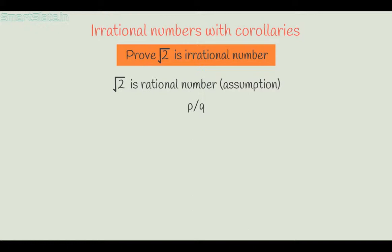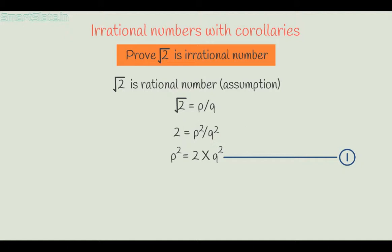Remember, co-primes means the numbers have only 1 as their common factor. Also remember that a fraction can be reduced to a form where the denominator and numerator are co-primes. So we write square root of 2 equals p by q. Squaring both sides gives 2 equals p squared by q squared. Rearranging, we get p squared equals 2 times q squared. We will mark this as statement 1.